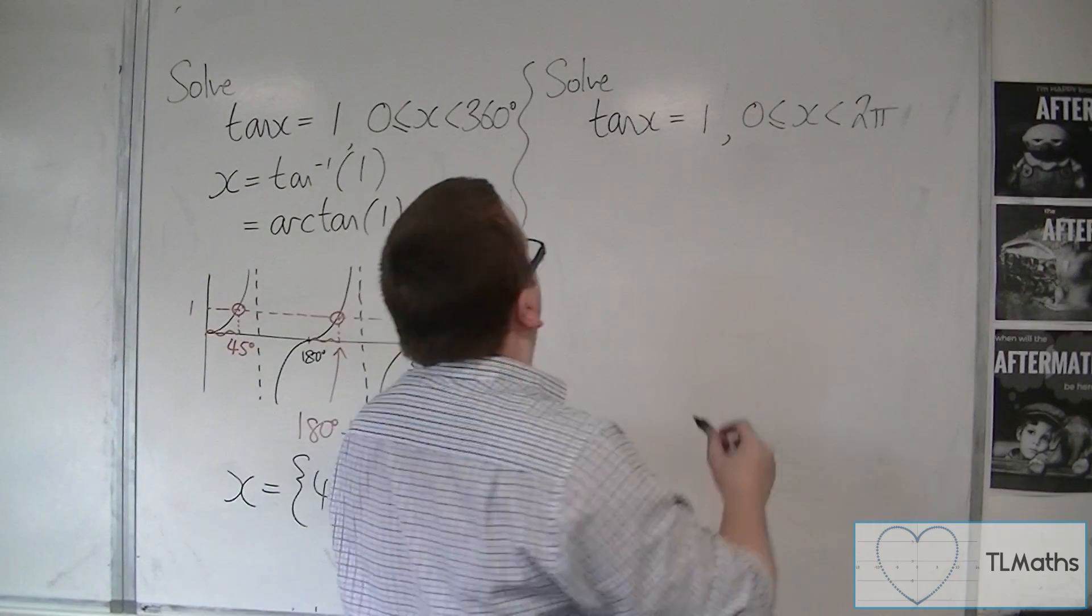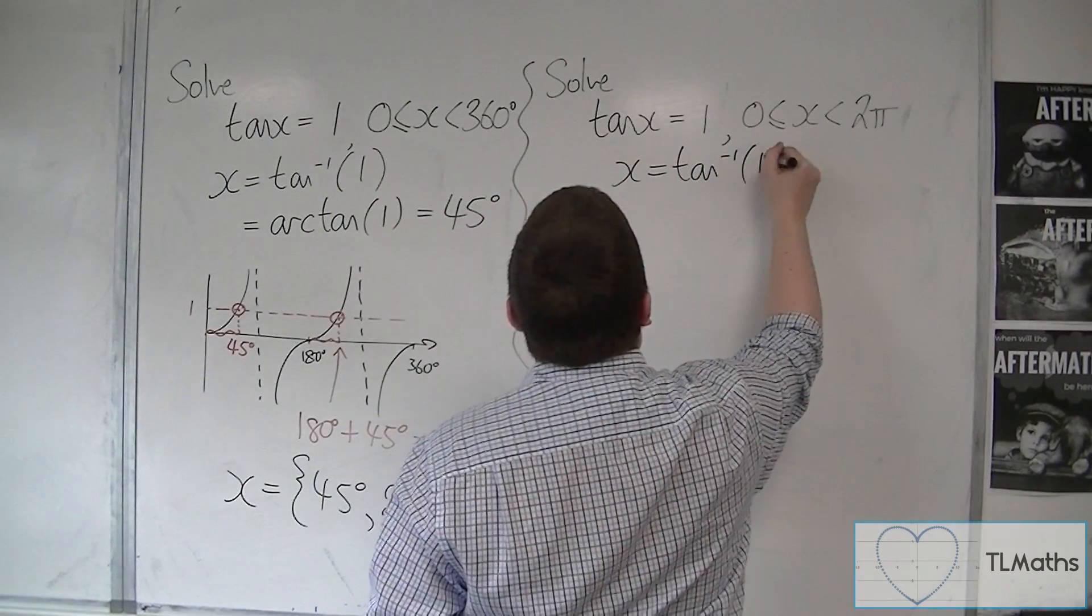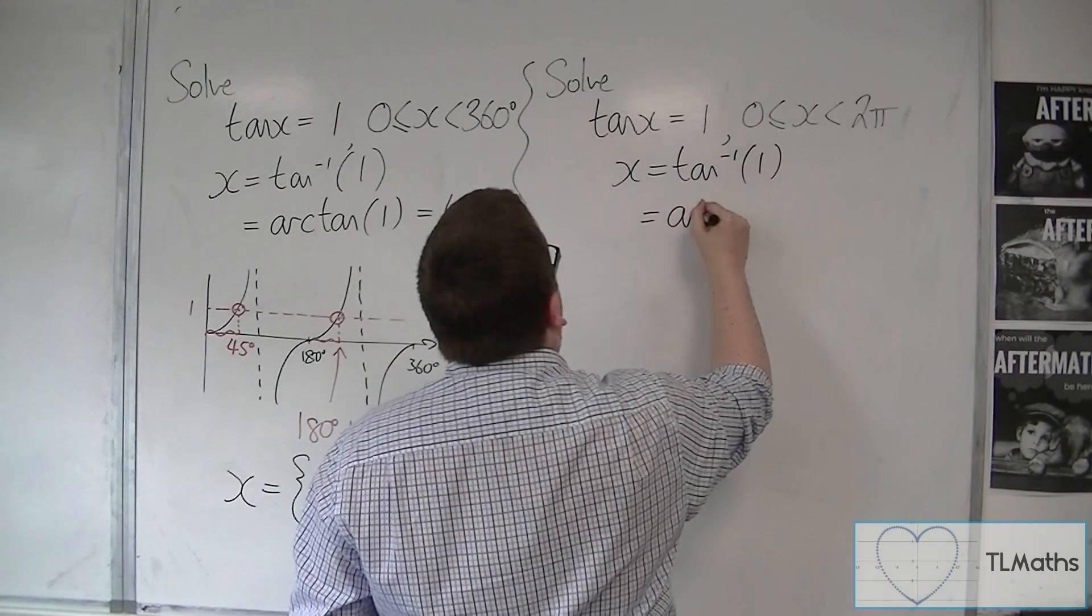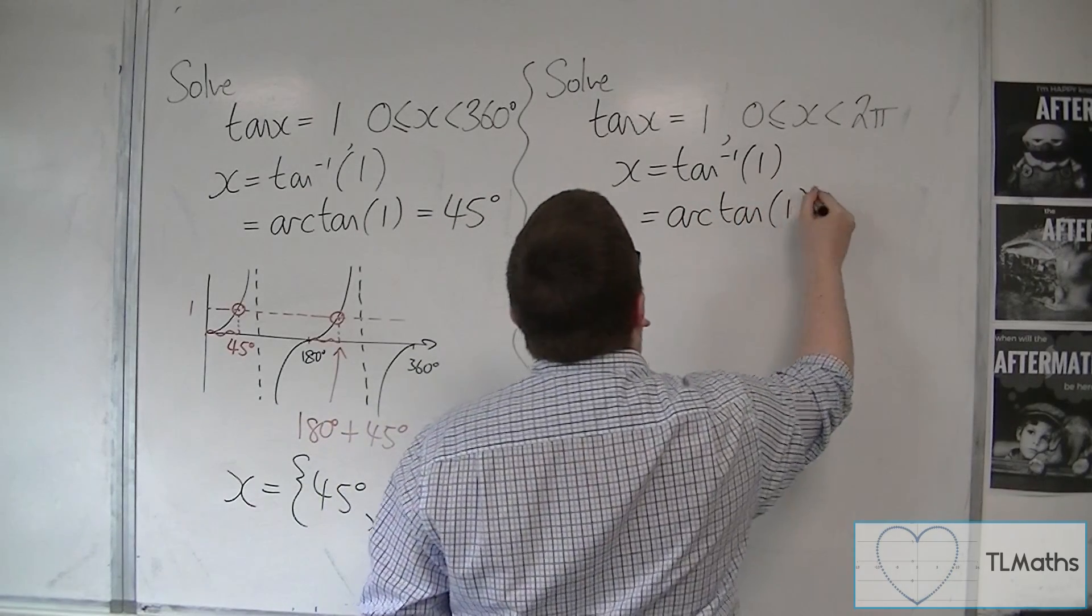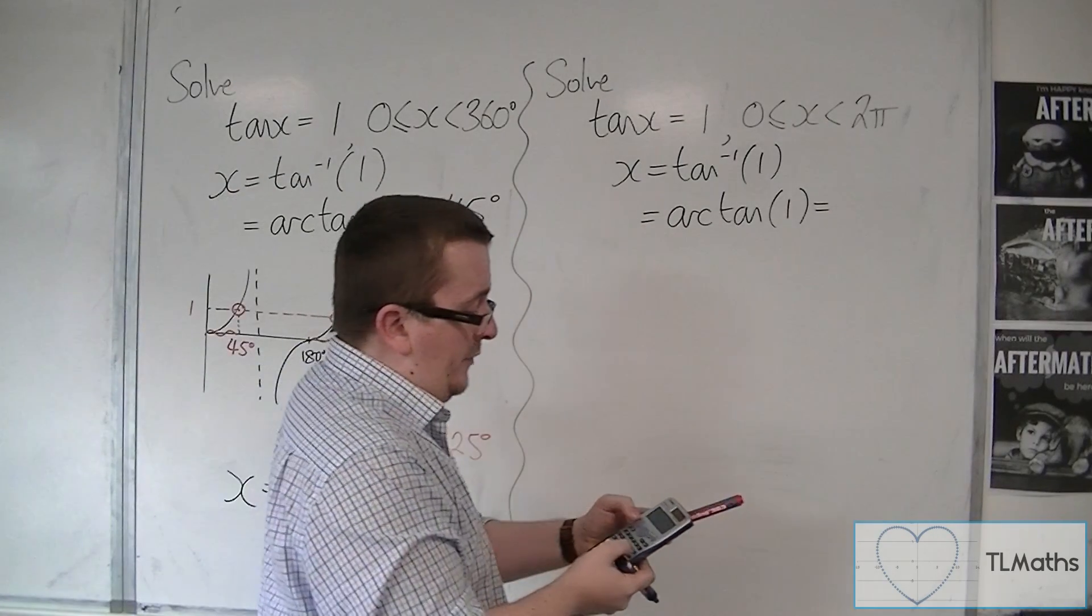In radians, x will be the inverse tan of one. We can write that as arc tan of one. And that's, well, I've got to change my calculator to radians first.